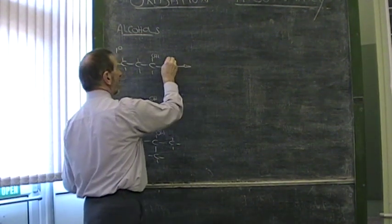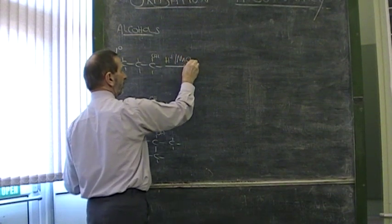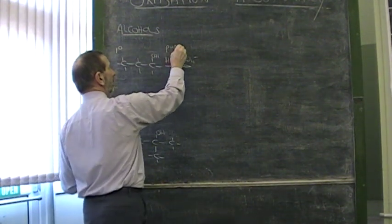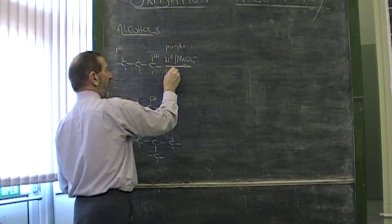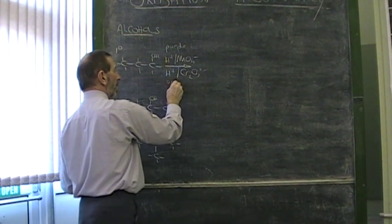We used acidified H plus permanganate, MnO4 negative, the purple color. We used acidified H plus dichromate, Cr2O7 2- negative, orange color.